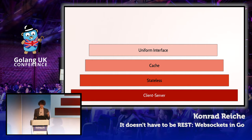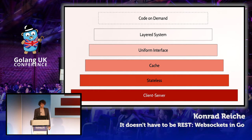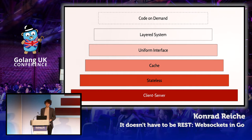The uniform interface constraint consists of four sub-constraints. One: it should be possible to identify a resource — with HTTP that's done with URIs. Two: it should be possible to manipulate resources through representation — done with the HTTP verbs. Three: messages should be self-descriptive — done with MIME types. Four: hypermedia should be the engine of application state — basically hyperlinks used to link documents together. There's also layered system, adding a hierarchical layer structure where every component can only inspect its own layer, and optional code on demand, allowing applets or scripts to download and execute behavior locally.